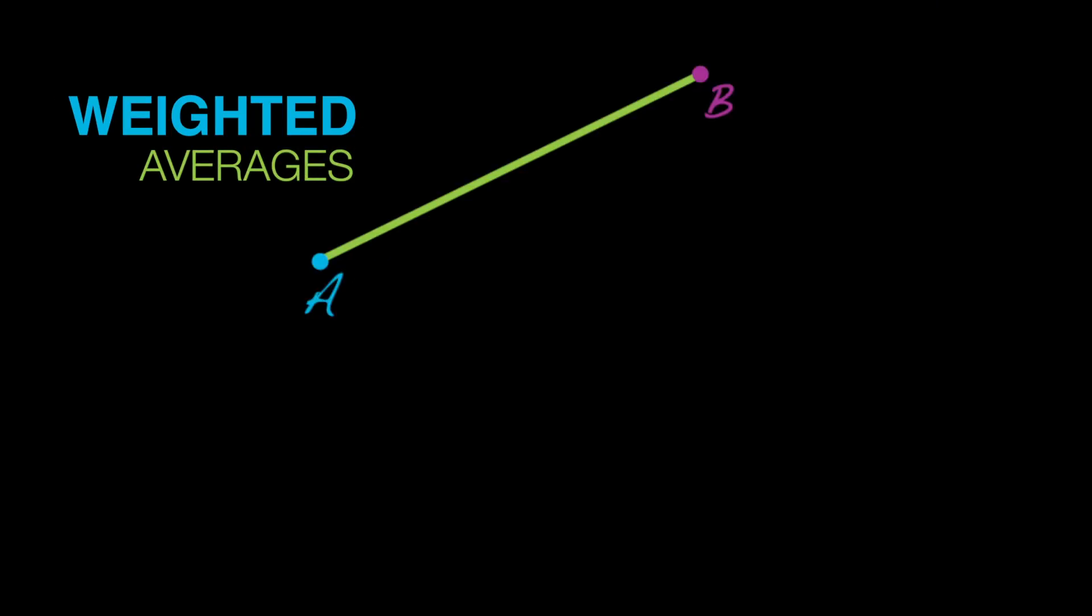Our first step in the search of that formula is to generalize the idea of averaging, or midpoints, to the idea of weighted averages. So let's look at our line segment AB again. But instead of wanting to compute the midpoint, suppose I want to compute a point M, say right about here, that weights B twice as heavily as A. There isn't anything particularly special about weighting B twice as heavily as A. It's just a simple, non-midpoint example.